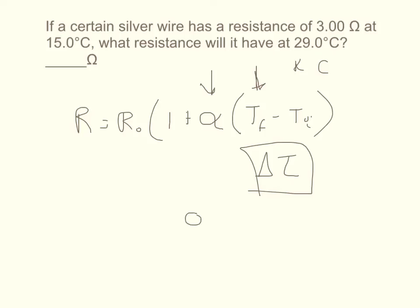For example, if I have something at 273 Kelvin and it goes to 283, that's a change equal to 10. That same thing in units of Celsius would be 0 to 10 degrees, which is a change of 10.